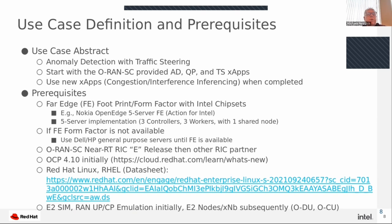The use cases we're starting with tend to be proactive maintenance telco use cases. That involves anomaly detection upfront with traffic steering to move away from the anomaly — for example, interference or congestion. We will be starting with an O-RAN SC-provided near real-time RIC and some X-Apps, and over time we'll look at potentially using some of our tech partner RICs as part of the study.